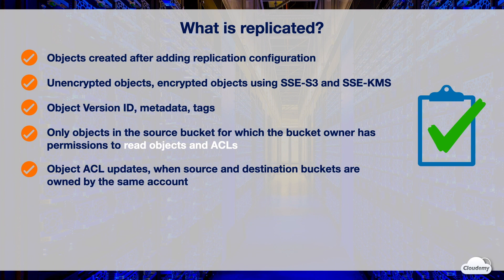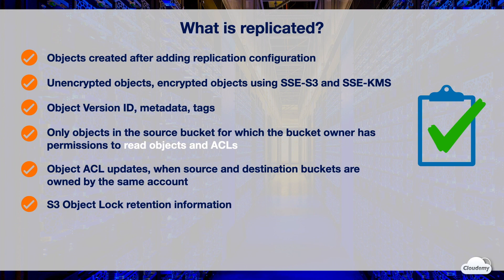Object lock retention information will be replicated if present. When S3 replicates objects that have retention information, it applies the same retention controls to replicas, overriding the default retention period configured on the destination bucket. If no retention control is applied to objects in the source bucket and the destination bucket has a default retention period, the destination bucket's default retention period will be applied to the replicas.